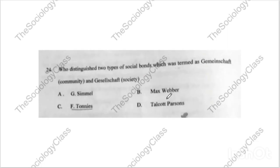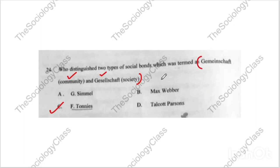Question number twenty-four: 'Who distinguished two types of social bonds termed as Gemeinschaft (community) and Gesellschaft (society)?' Remember, the meaning of both Gemeinschaft and Gesellschaft comes in the exam. This concept was given by Ferdinand Tönnies. Also remember their book — Ferdinand Tönnies wrote an entire book called Gemeinschaft and Gesellschaft, published in 1887. The year may also be asked.